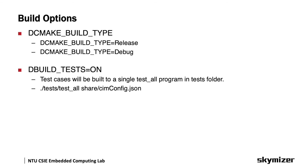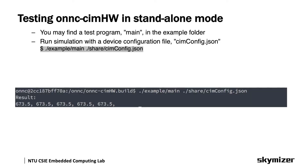There are two parameters in the compilation command. For the first parameter, you can choose between two build types: release and debug. Debug mode will give you more information during simulation. The other parameter is test — if you turn it on, a set of test cases will be placed in the test folder. We will build a release version for this example. After the project is built, you can use the main program to test if the build is successful. Remember to add cimconfig.json as a parameter. If you see the expected result, you have finished building in standalone mode.